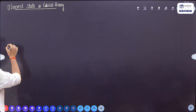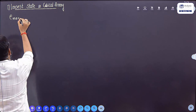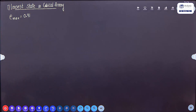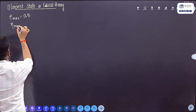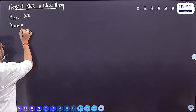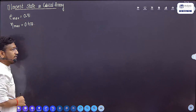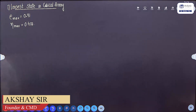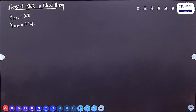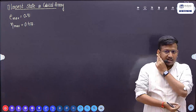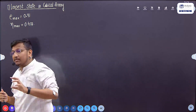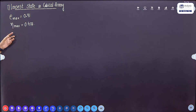In the loose state, e_max (maximum void ratio) is equal to 0.91, and porosity maximum is equal to 0.477. This is a static question that can be framed: for the loose state, what are the maximum void ratio and maximum porosity? These are the static values.